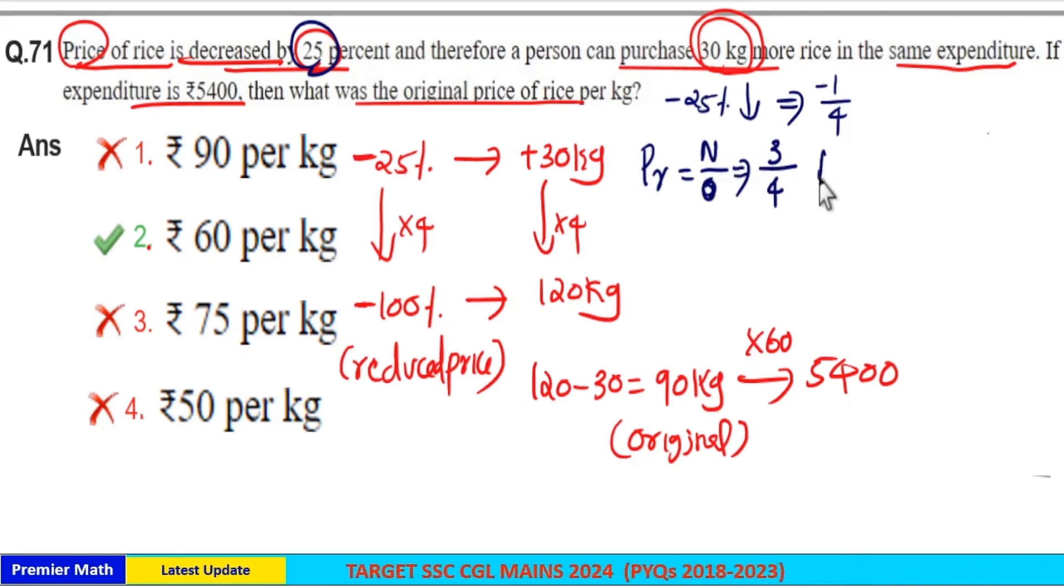This is price ratio. If you take amount ratio, amount ratio equals reverse of price ratio. Take reverse of 3 by 4 which is 4 by 3. New amount by old amount equals 4 by 3 parts. Now difference between 4 parts and 3 parts is 1 part which is given as 30 kg. When you reduce the price by 25% you get 30 kg more, means 4 minus 3, 1 part equals 30 kg.